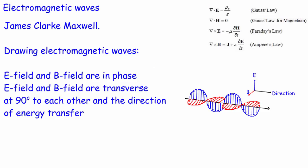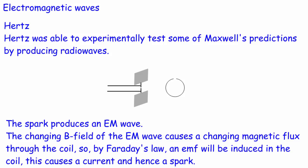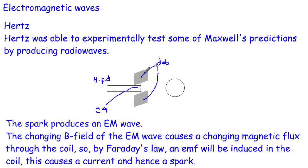Hertz then tried to experimentally test these predictions. First he needed to generate electromagnetic waves. He started with a high potential difference and essentially built a capacitor with two metal plates almost connected together but with a very small gap. When a large potential difference built up, opposite charges on the plates caused a spark across the gap. That spark meant a brief current flowed, producing a magnetic field, which induced an electric field, which induced a magnetic field — creating a short pulse of electromagnetic waves.